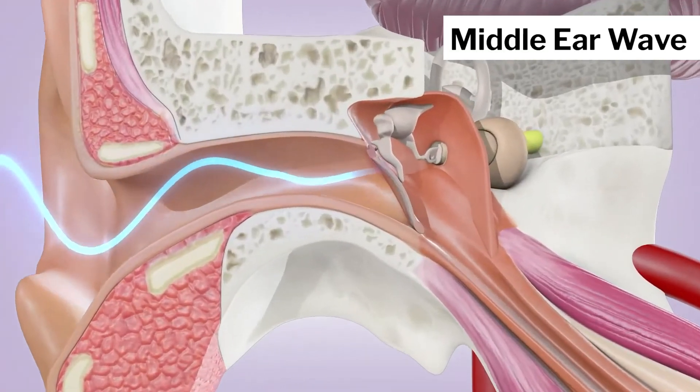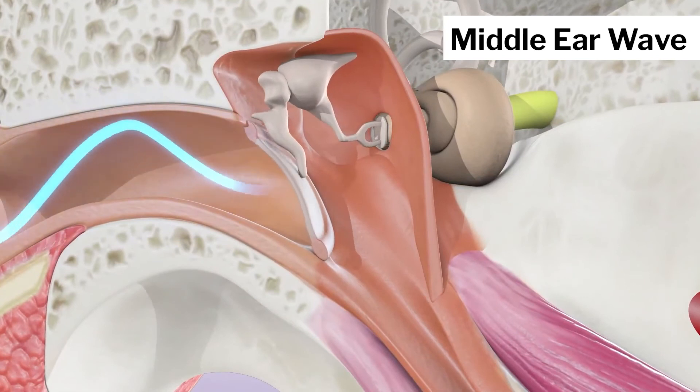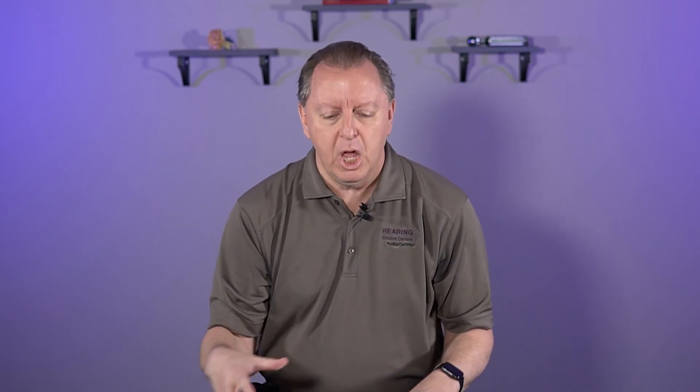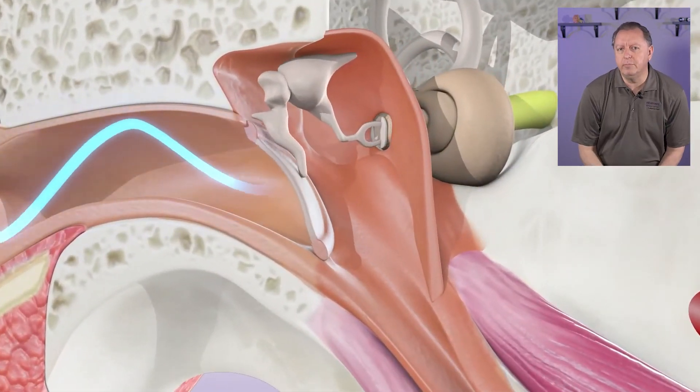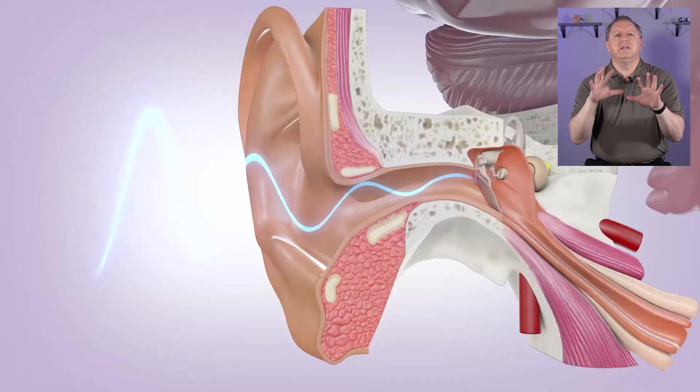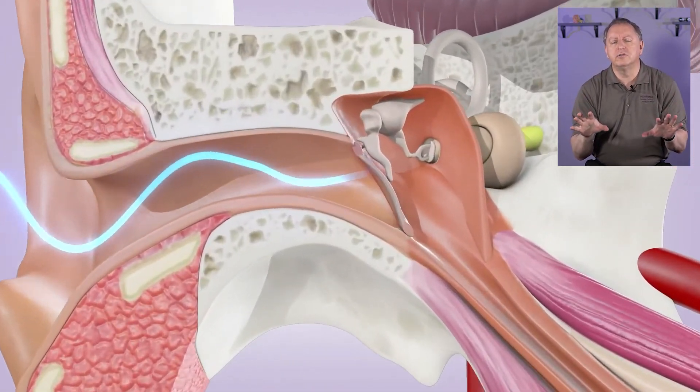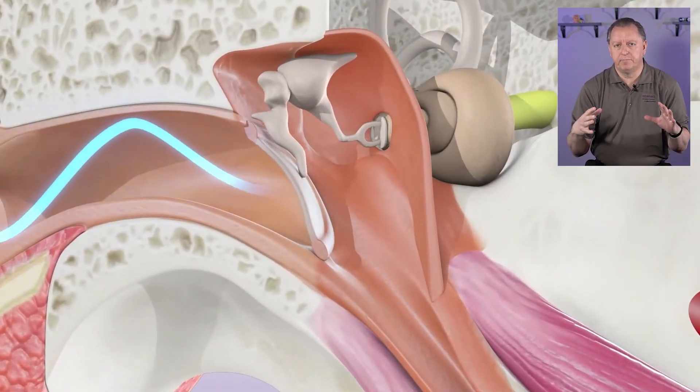In the middle ear wave, what you're going to see is that sound comes into the ear, it hits the eardrum, and the eardrum starts to vibrate. The middle ear waves and has that sound that comes in. It's different in different parts of the eardrum — high pitches go to one spot, and lower pitches go more toward the middle.